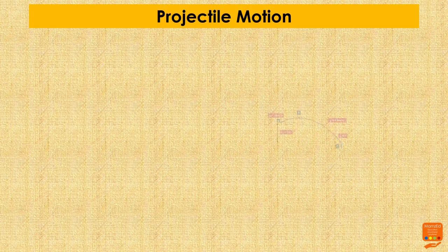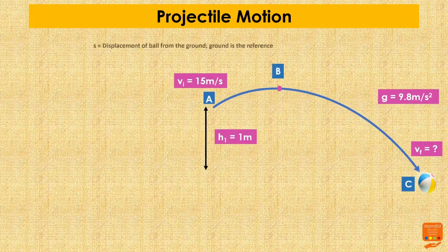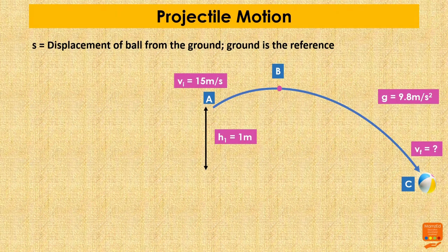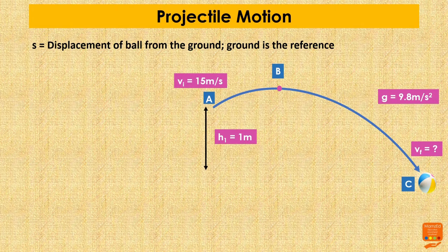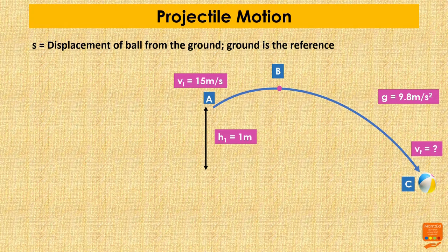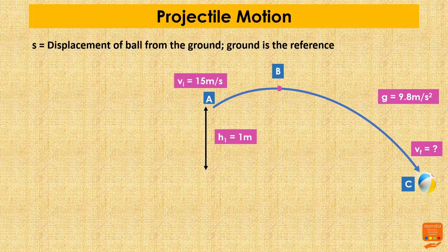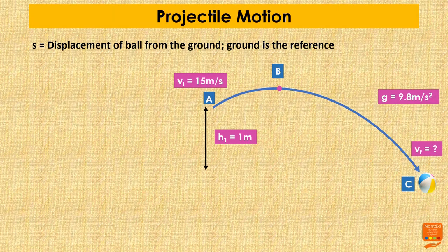Let S denote the displacement of the ball from the ground at any given time. Remember, we are taking the ground as our reference. Because displacement is the shortest and direct distance between two points, the displacement here is the vertical distance between the ball and the ground — not the curved path the ball follows when thrown in the air.